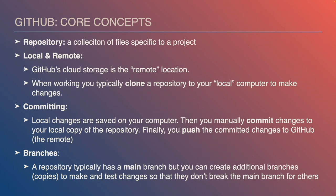Once you've made commits on your local copy, you're going to push those committed changes to GitHub. Another concept we'll work with is branches. Typically a repository has a main branch with all the files in it, but you can create additional branches, which are essentially copies of the repository. The idea is that if you want to try out a change that might break things, you don't want to push changes to the main repository that could break things for other people.